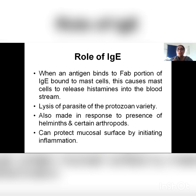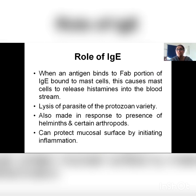When IgE is at normal concentration, it is helping by calling lymphocytes through histamine release from mast cells. It protects us from parasites like protozoans, helminths, and arthropods. When it calls the lymphocytes towards its site, it gives rise to inflammation and that helps us.